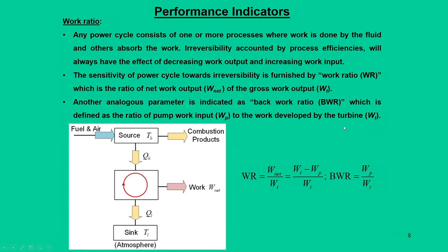The next parameter is work ratio. Net work consists of two parts: turbine work and pump work. Their difference is the net work, while the gross work is defined by the turbine work alone. So work ratio is defined as W_net divided by turbine work. Many books also refer to the back work ratio, which is pump work divided by turbine work — the additional input required by the engine to produce turbine power. Our attention will be mainly focused on the work ratio.